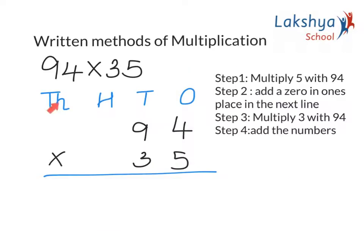Let's learn to add the numbers vertically. We need to first list the number according to its place value and follow the steps of multiplication. Step 1: we need to multiply 5 in ones place with 94. So let's start working out.